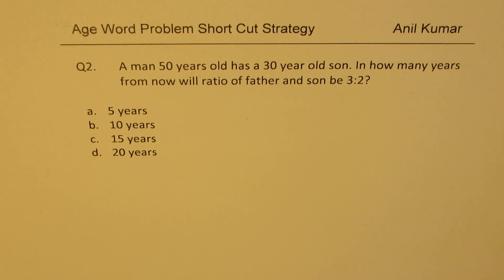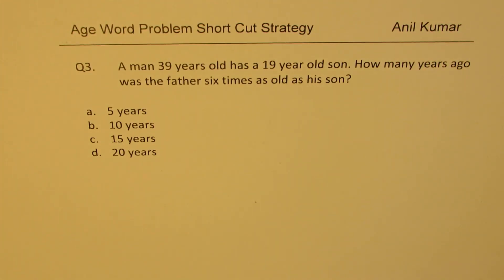Question number two here is: a man 50 years old has a 30 year old son. In how many years from now will ratio of father and son be 3 is to 2? So here we are given the present age. The third question is: a man 39 years old has a 19 year old son. How many years ago was the father 6 times as old as his son?